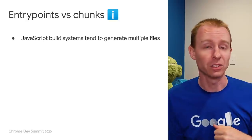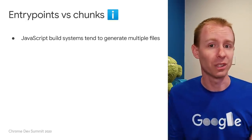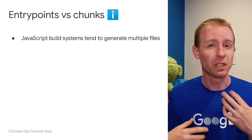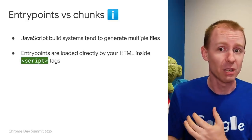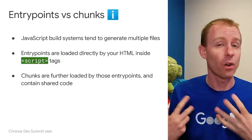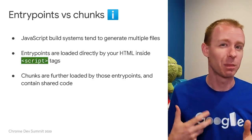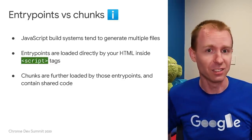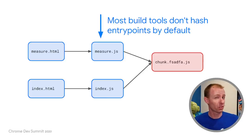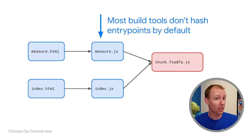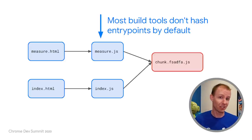Let's have a quick look at JavaScript build systems. Tools like Rollup and Webpack will often generate multiple files, pulling shared code into a common bundle so there's no duplication. These tools generate two classes of files: entry points, loaded directly by your HTML inside script tags, and chunks — anonymous bits of shared code. What I find interesting is that these build tools will often hash their anonymous chunks of code, but they won't hash their entry points, at least not by default. These files can't be cached forever — they haven't got a unique name. This means we now have two layers of validation to perform, which introduces critical request chains and an extra round trip.